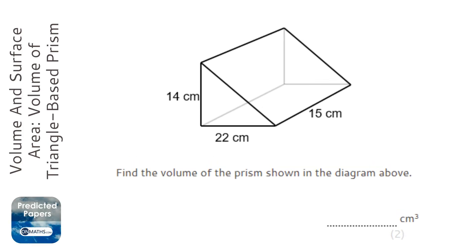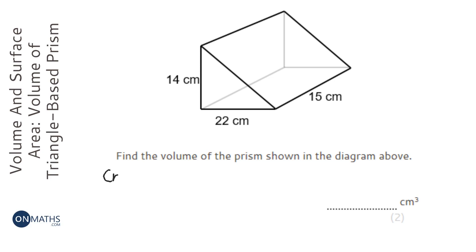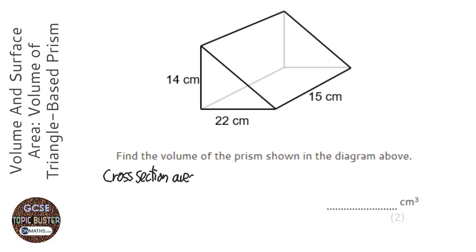To work out the volume of a prism, we work out the area of the cross section and multiply it by how 3D the shape is, which we call the length. So we're going to work out first of all the cross section area. The cross section is a triangle, so the formula for area of a triangle is half times base times height.